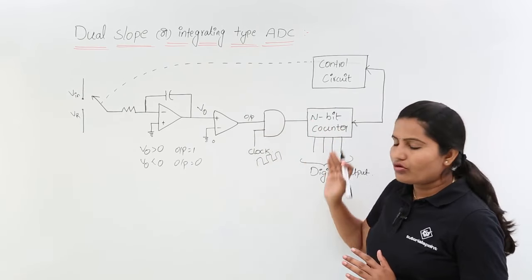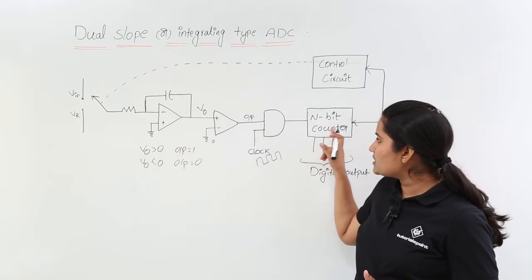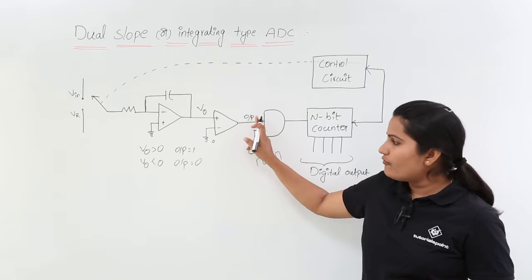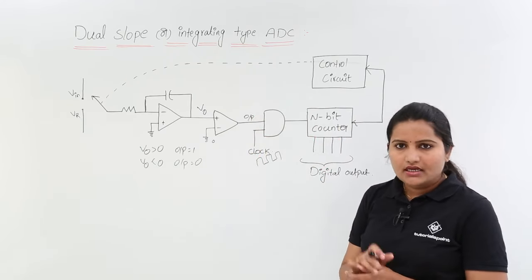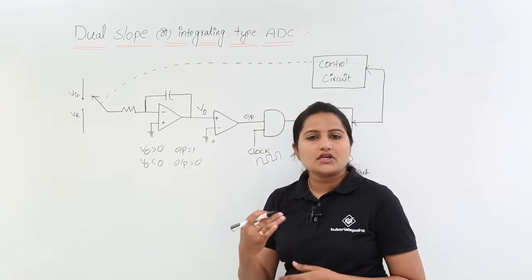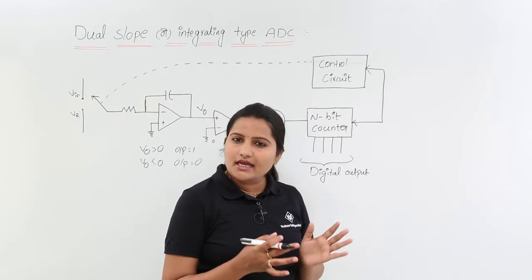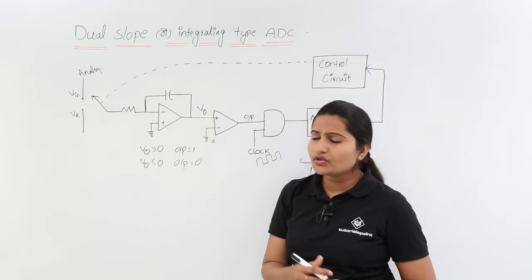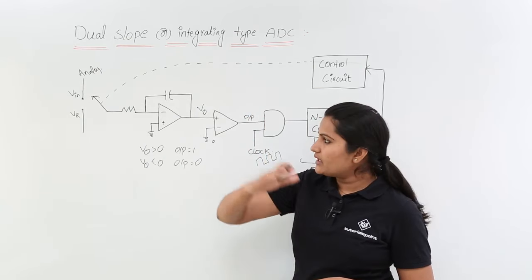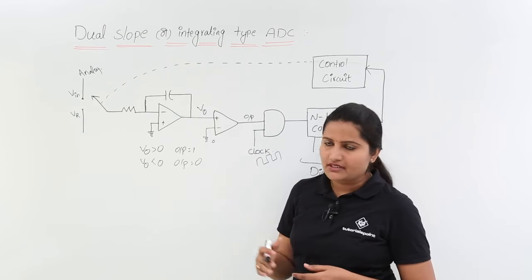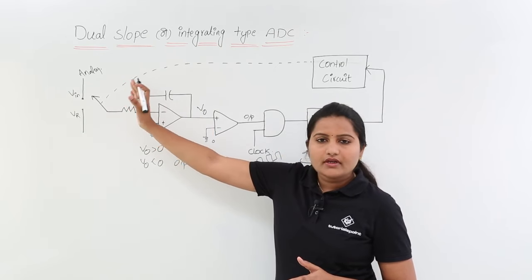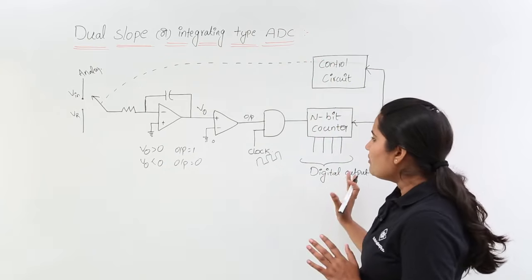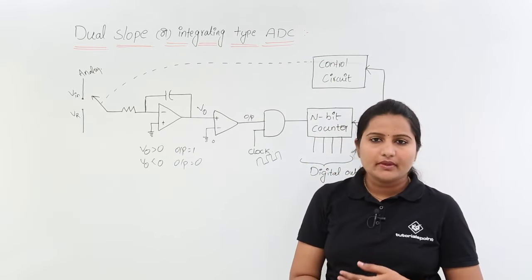Whenever V0 is greater than 0, output becomes 1, and the clock passes to the output of the AND gate. That clock is counted by the n-bit counter. The counter starts from 0 and counts up. Here you are giving your analog input, and you are getting the digital output of your ADC. For example, if you take a 3-bit counter, your output will be 3-bit digital data.